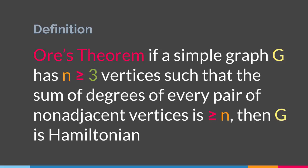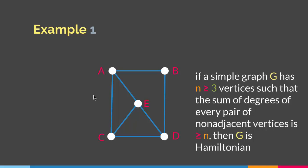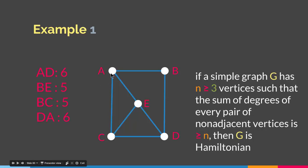Let's say we have a graph like this — as you can see, we have 1, 2, 3, 4, 5 vertices. Let's see if the condition applies to this particular graph. The sum of the degrees of every pair of non-adjacent vertices has to be greater than or equal to 5 in our case. The non-adjacent vertices in this example are: A and D, B and E, B and C, and D and A — because A and D are not directly connected, B and E are not directly connected, and the same goes for B and C and D and A. So let's check the sum of their degrees.